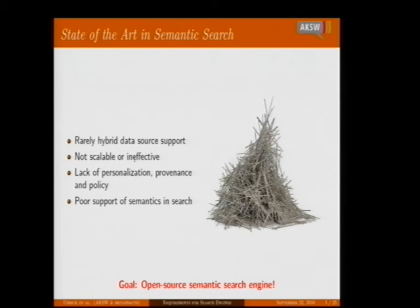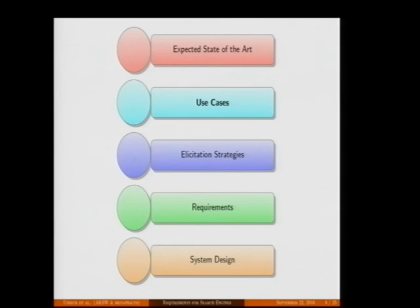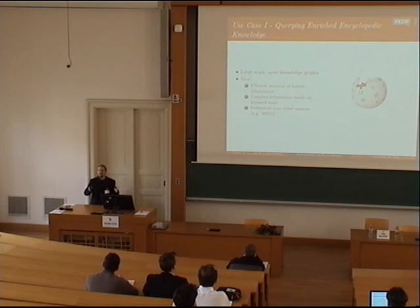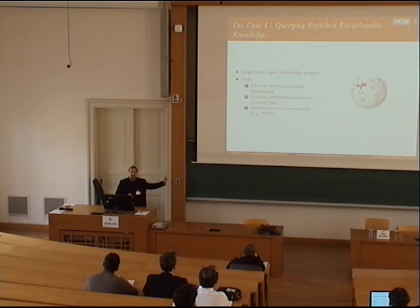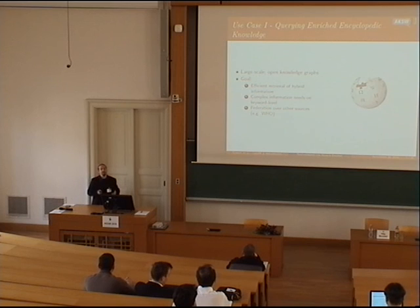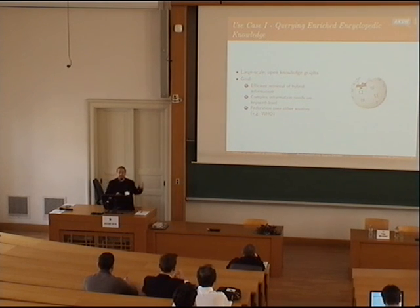Our goal is to develop an open source semantic search engine tackling all those problems. We have three use cases in our partner project. The first is an academic use case querying encyclopedic knowledge like Wikipedia — full text knowledge combined with semantics. We want to efficiently retrieve hybrid and complex information based on keyword-level queries, and federate over several sources like the World Health Organization to answer questions pertaining to medical, industrial, and automotive data.